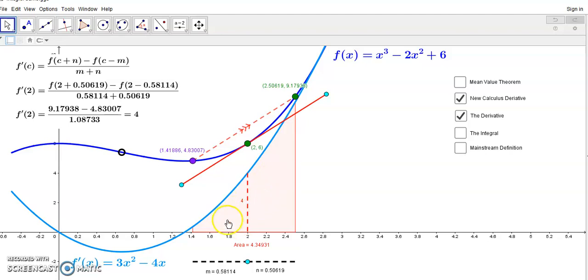And so, the area of the shaded region is just 4 times the interval width, which is this bottom number here. And this is how we do it.